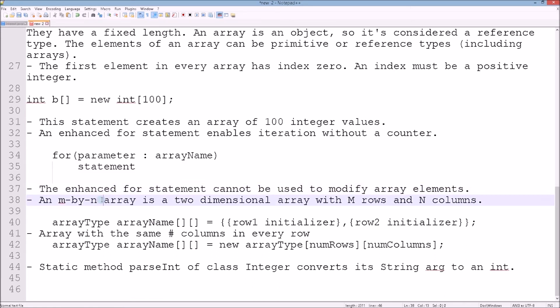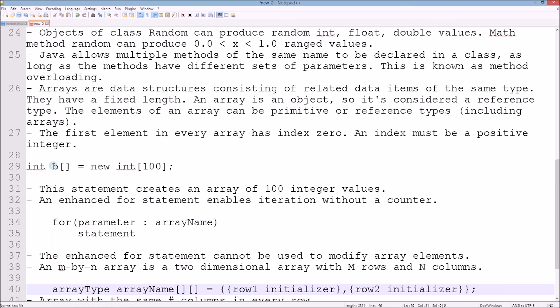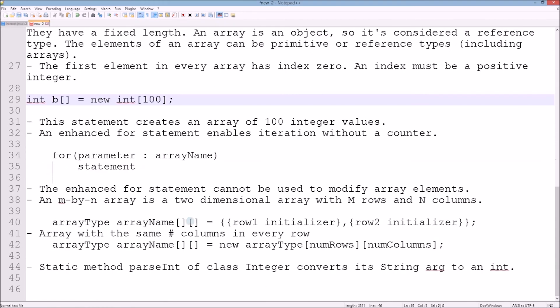We have a thing called an m by n array, and that's a two-dimensional array with m rows and n columns. We have arrayType arrayName with nested brackets, initialized with row initializers. An array with the same number of columns in every row can be declared as: arrayType arrayName[][] = new arrayType[numberOfRows][numberOfColumns].